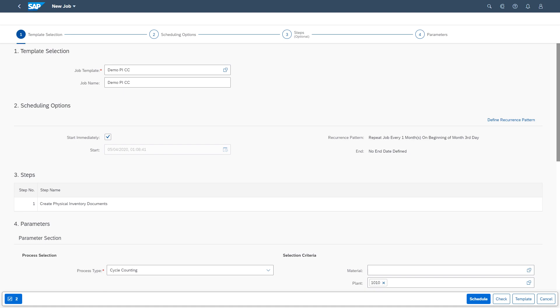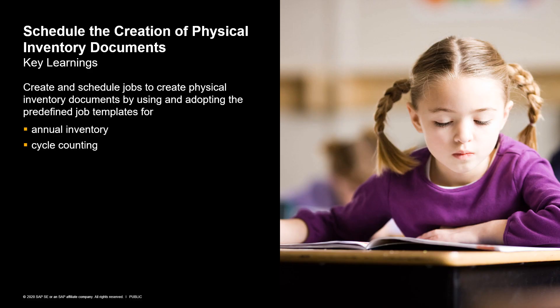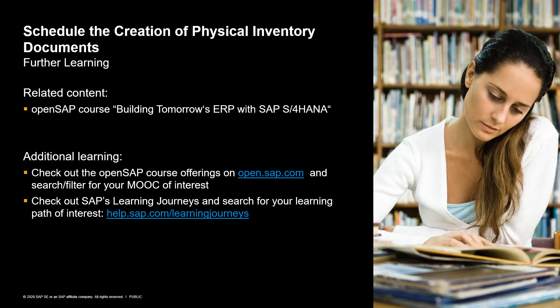With this, we are at the end of the system demo. Let's summarize the key learnings: you have learned how to create and schedule jobs to create physical inventory documents by using and adopting the predefined job templates for annual inventory and cycle counting. For further learnings, check out the offering of openSAP courses on open.sap.com and SAP's learning journeys on help.sap.com/learning-journeys. Thank you and goodbye.